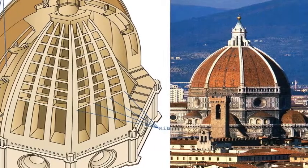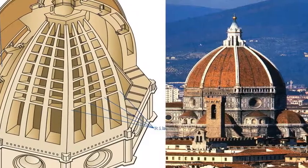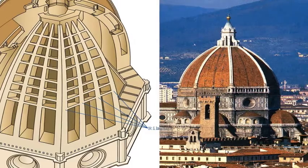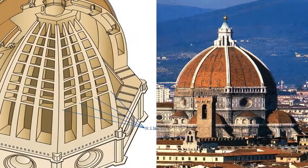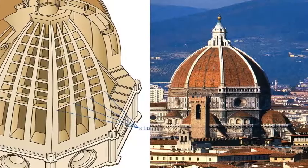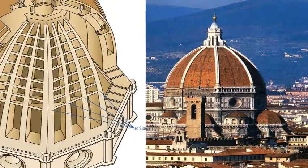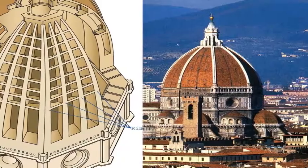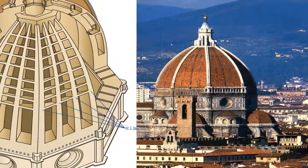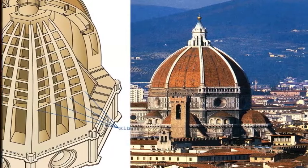The knowledge thus gained helped him to solve the problem of constructing a dome for the Cathedral of Florence. Though the building of the Cathedral had begun in the last years of the 13th century, nobody had been able to work out a method of constructing the dome, which had to cover a space 140 feet across. Brunelleschi's solution was the dome that came to dominate the Florentine skyline from 1436, the year it was completed.